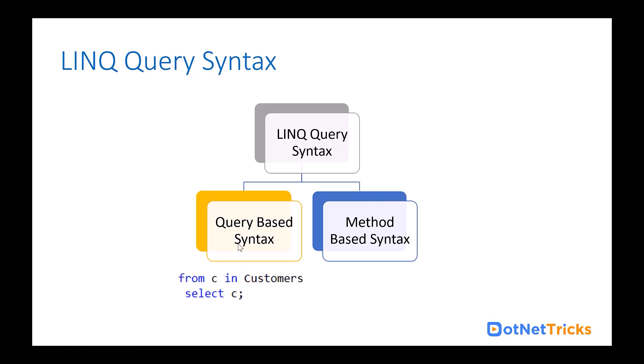When you are willing to fetch all the customers from the database, you can write the query using 'from C in customers' — where C is the alias name for the customers — and then selecting all the customers. In T-SQL, we write the same style: 'SELECT * FROM Customer'.